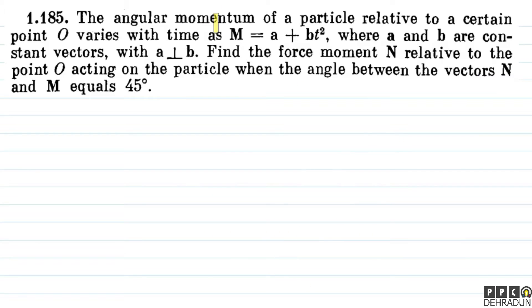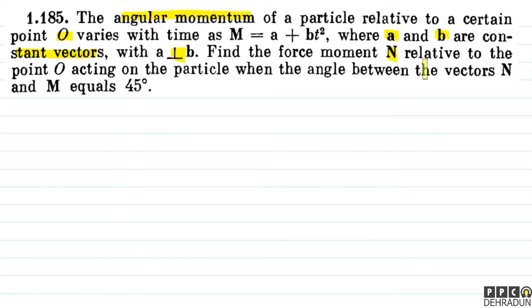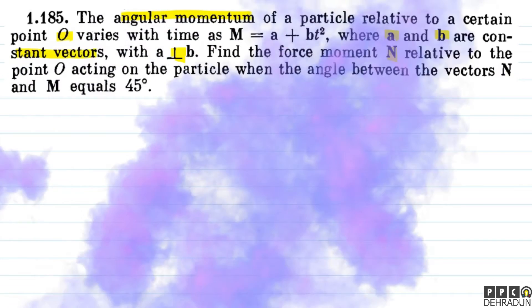The question says: the angular momentum of a particle relative to a certain point O varies with time as m vector equals a vector plus b vector into t squared, where a vector and b vector are constant vectors with a perpendicular to b. Find the force moment n vector relative to the point O acting on the particle when the angle between the vectors n vector and m vector equals 45 degrees.